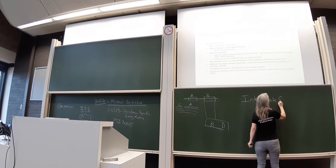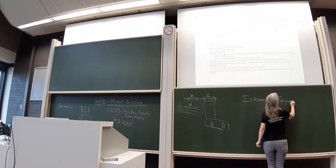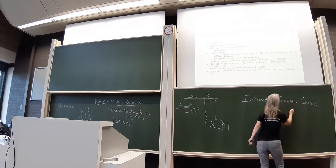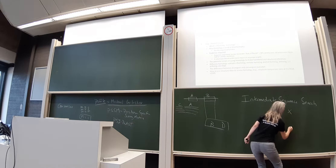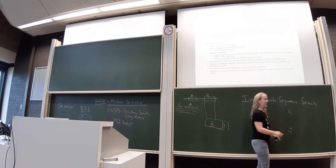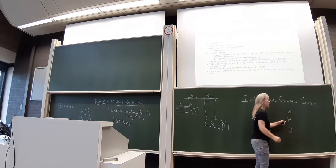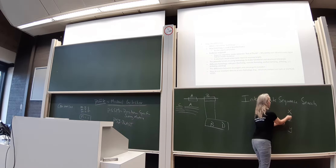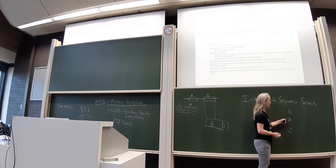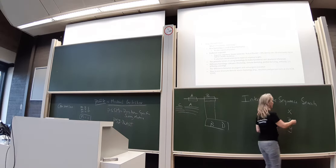There's another approach called intermediate sequence search. The basic idea is: if you want to prove that X and Y are related but can't find a direct connection, you find an intermediate sequence Z such that from X you can get to Z, and from Z you can get to Y. Then there's the transitive assertion: if X is related to Z and Z is related to Y, then X is related to Y. That's transitivity.